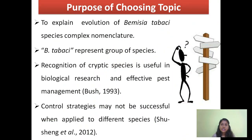I chose this topic in order to explain the evolution of the Bemisia tabaci species complex nomenclature, which is highly variable and is creating great confusion. Bemisia tabaci is not a single species but represents a group of several species. Recognition of these species is very much useful in pest management.